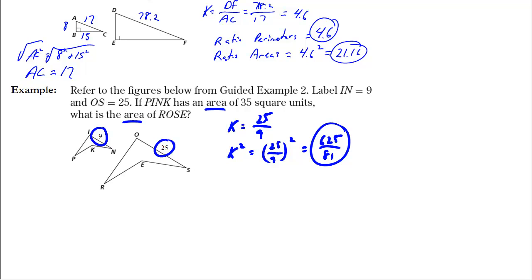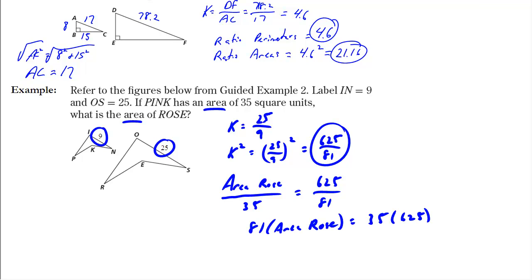The first thing to do is identify the ratio for the proportion. To find the area of Rows, the larger figure, I set up: area of Rows over 35 equals 625 over 81. Using the means-extremes property and cross-multiplying: 81 times area of Rows equals 35 times 625. Dividing both sides by 81 and calculating gives an area of approximately 270 square units.